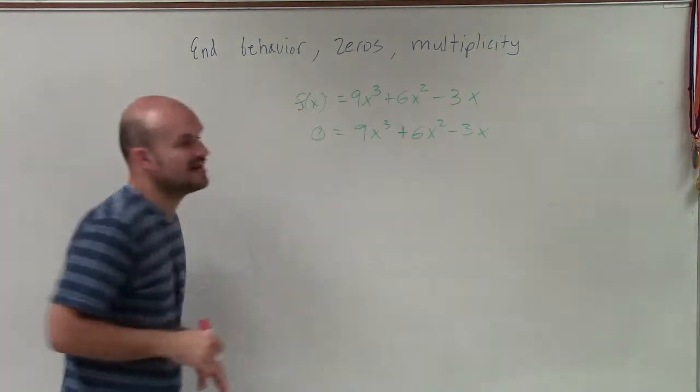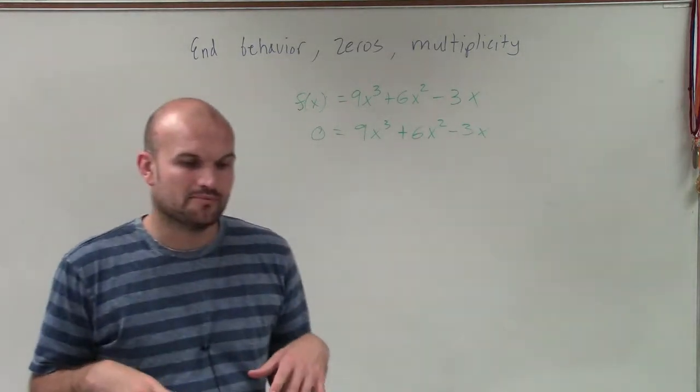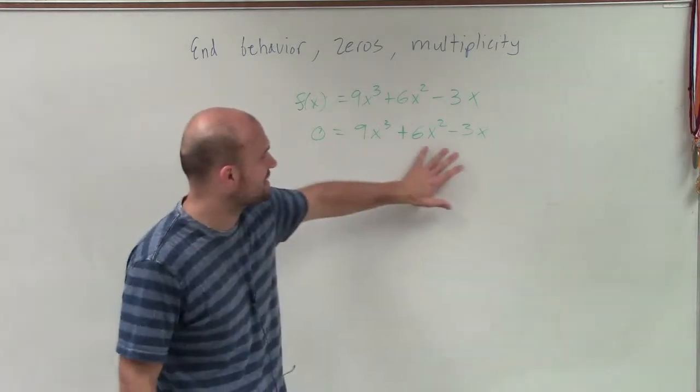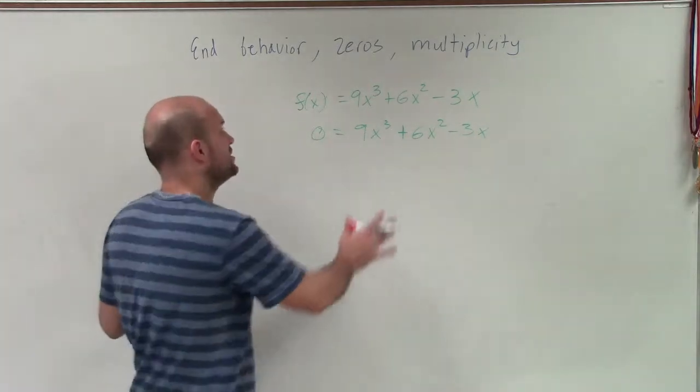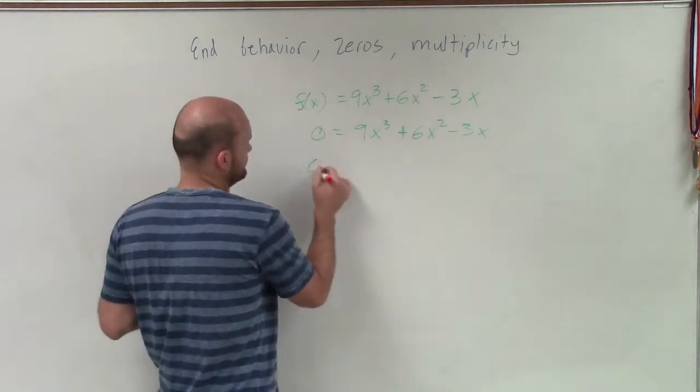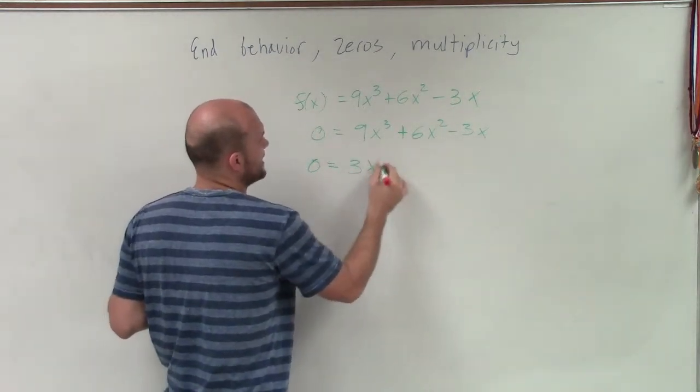And then the next step is we always want to determine our GCF when we're factoring, because we need to solve for x. So we always want to factor this out. We notice that each one of my values, I can factor out a 3x.